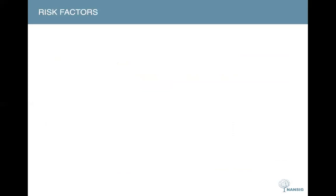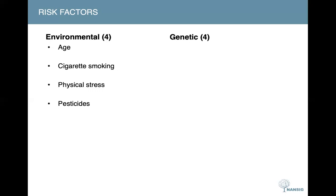Now, let's move on to the risk factors. Most cases of motor neuron disease have no known cause and are known as sporadic cases. However, both genetic and environmental factors are believed to be involved. The minority of cases have a genetic cause linked to a family history of the disease, and these are known as familial cases. The environmental factors often associated with MND are age, smoking, physical stress, and pesticides.